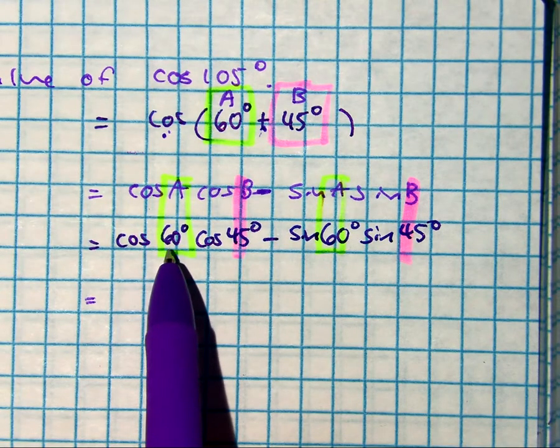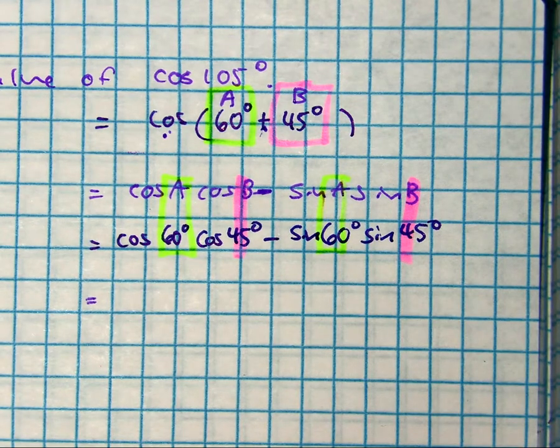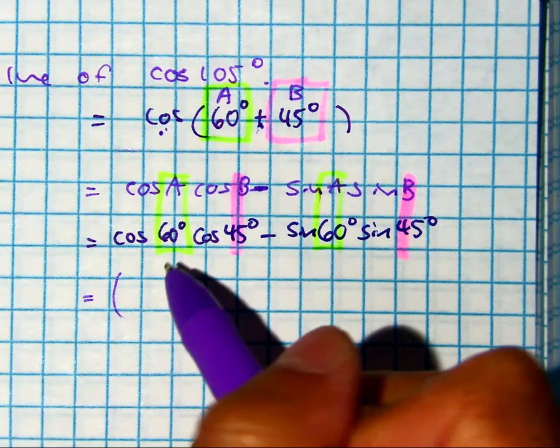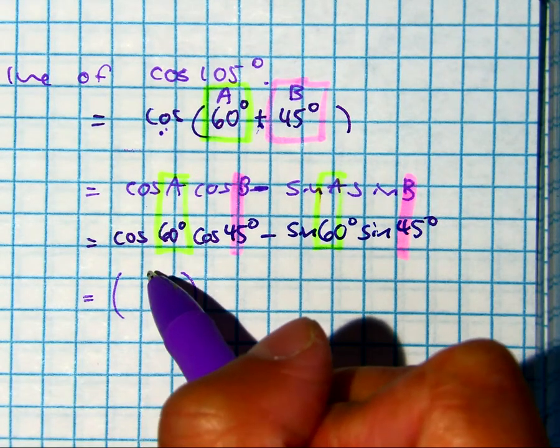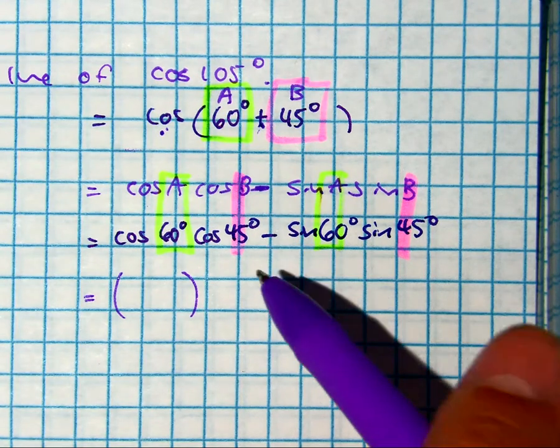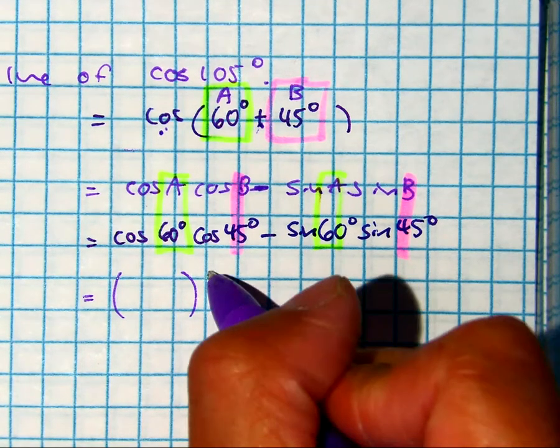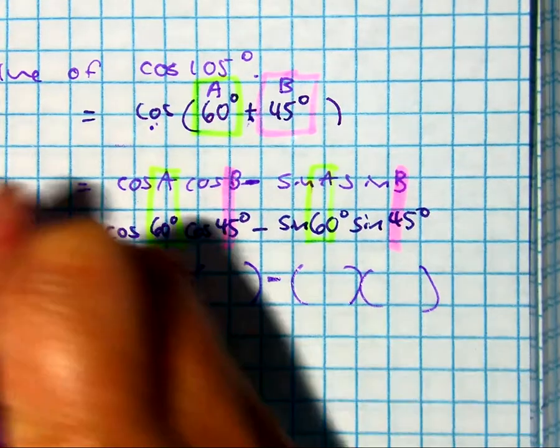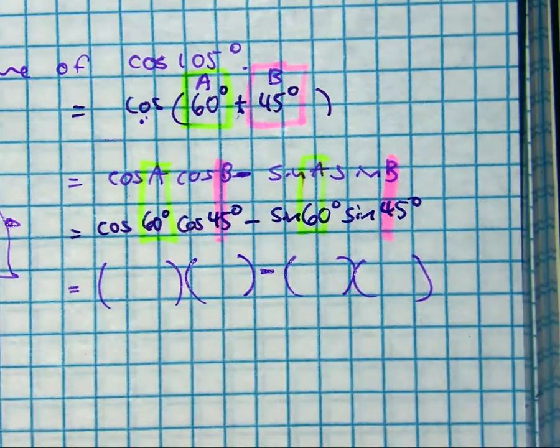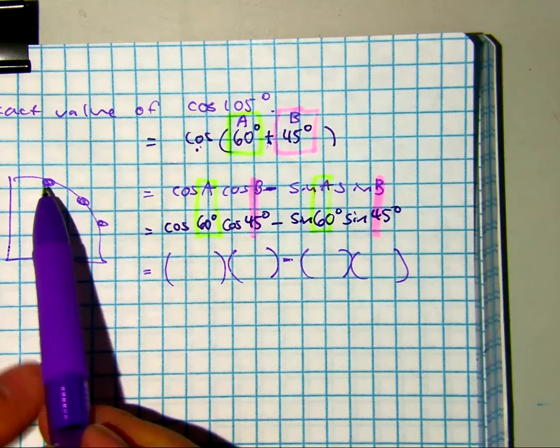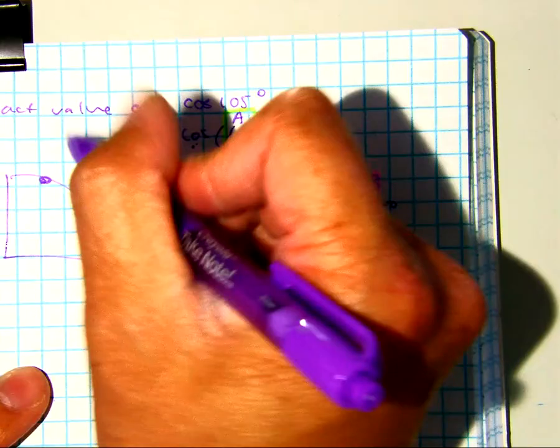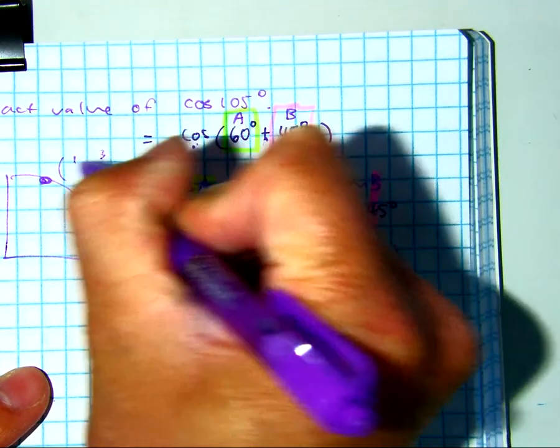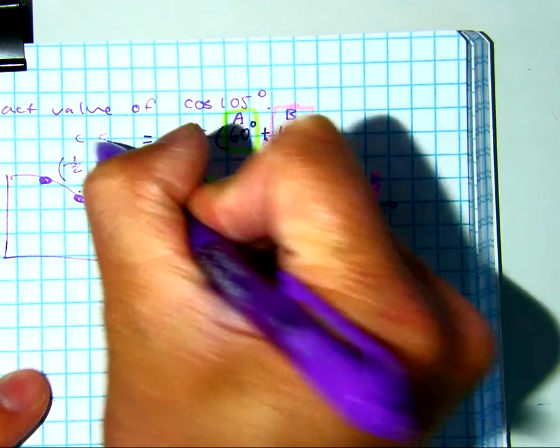Now we're just going to use our unit circle to evaluate this. Class, cosine at 60. Talk to your partner in 10 seconds. Class, what's your ordered pair there? One half, square root of three over two. Cosine, sine. So we have one half. Cosine of 45, radical 2 over 2.